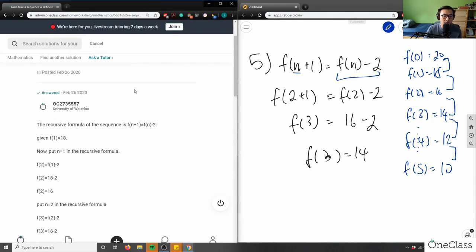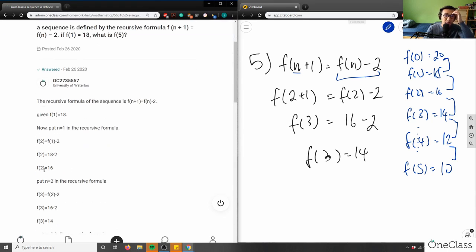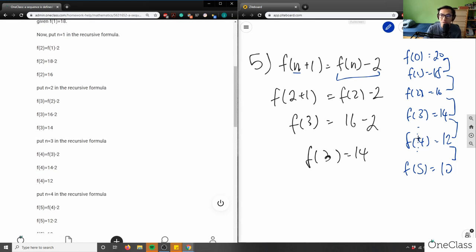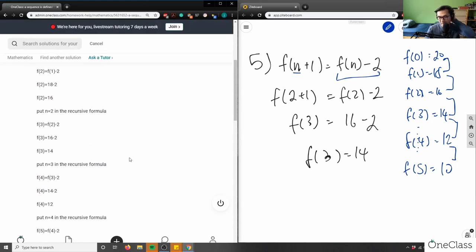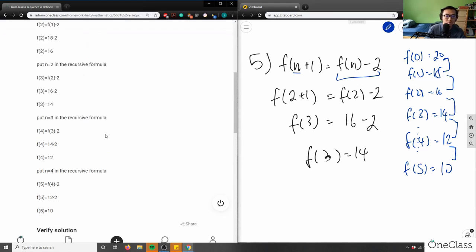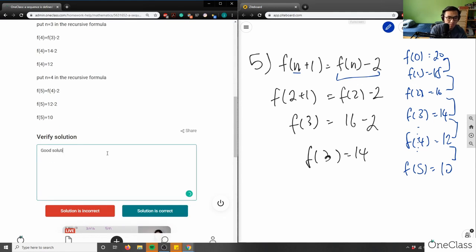Okay, so let's solve this. Let's look at this problem here. So they put n equals 1, they solved for it. f(2) is 16, that's good. f(3) is 14, f(4) is 12. f(5) here is 10. So they actually just subbed in all the values and then they plugged it in. So this is a good solution. Good solution and step-by-step.